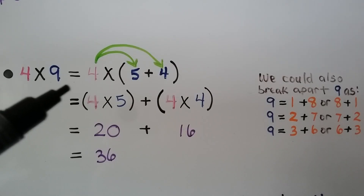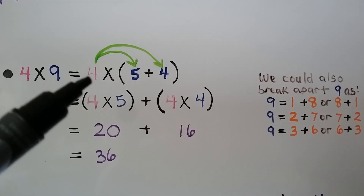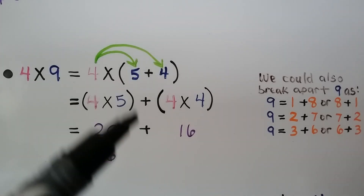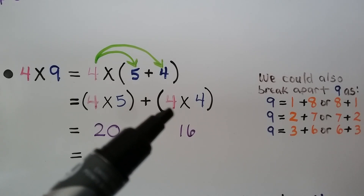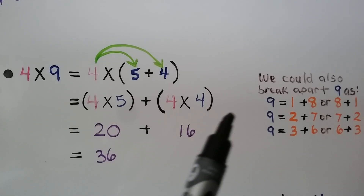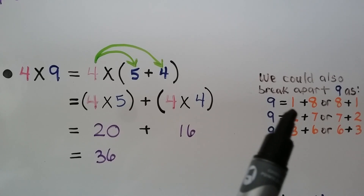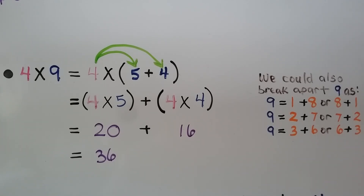For 4 times 9, we can break the 9 into a 5 plus 4. Then multiply 4 times 5 plus 4 times 4. 4 times 5 is equal to 20, and 4 times 4 is equal to 16. So 4 times 9 is equal to 36. We also could have broken 9 apart as 1 plus 8, 2 plus 7, or 3 plus 6 — it still would have worked and we still would have gotten 36 as our product.